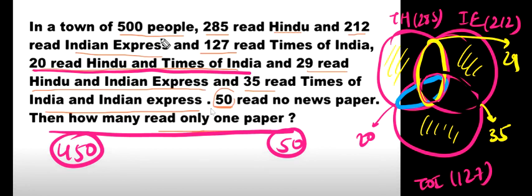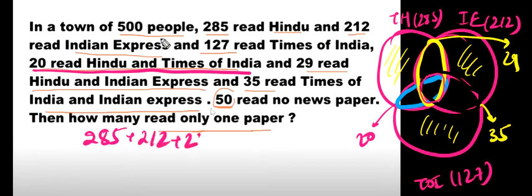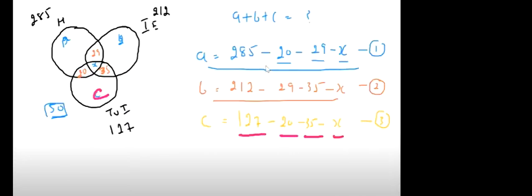So how many are the total number? First we have 285 plus 212 plus 127 — all of them. But we have to minus the common parts: minus 29, minus 35, minus 20. These are the people who read only one newspaper.